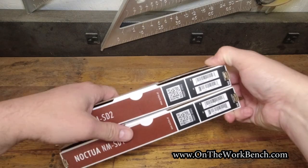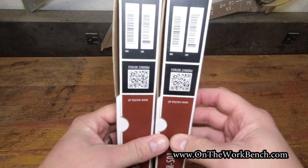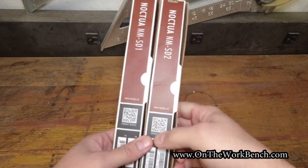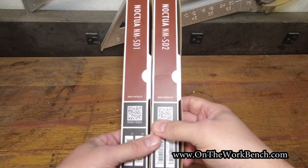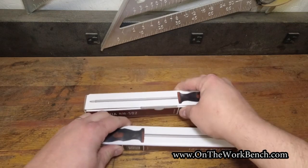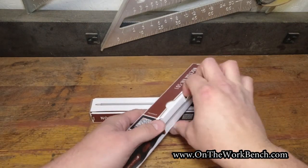These come individually boxed. On the box there's a QR code. This has the Austrian website for Noctua on it. And these are both noted as made in Taiwan. So let's take a look at these and see what we get with these screwdrivers.